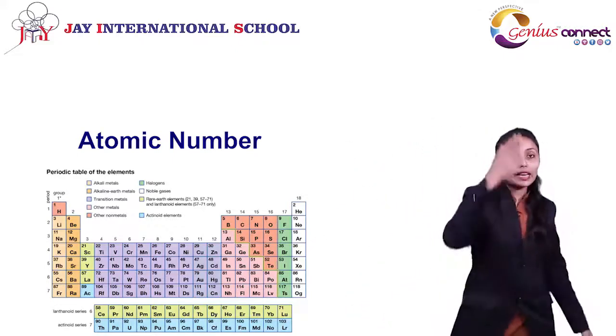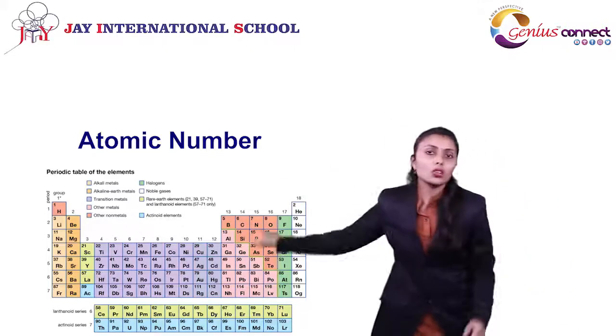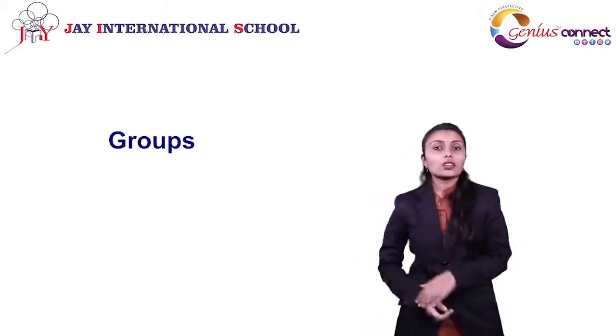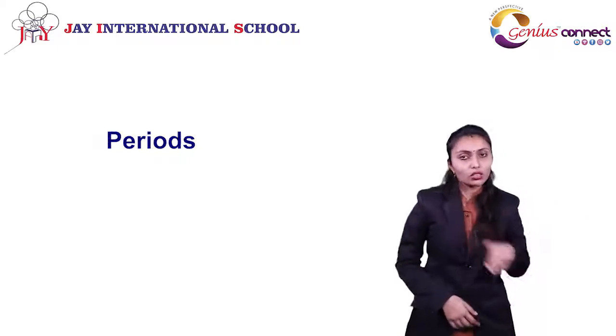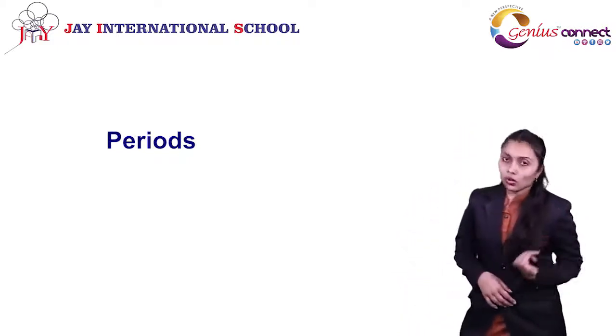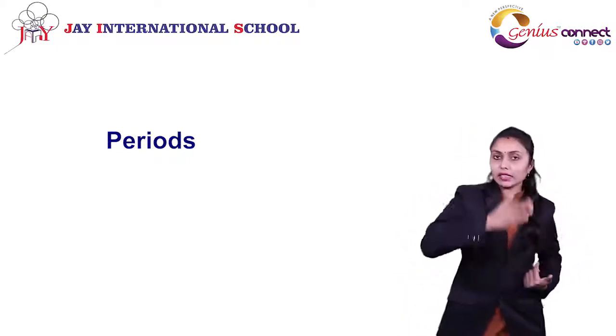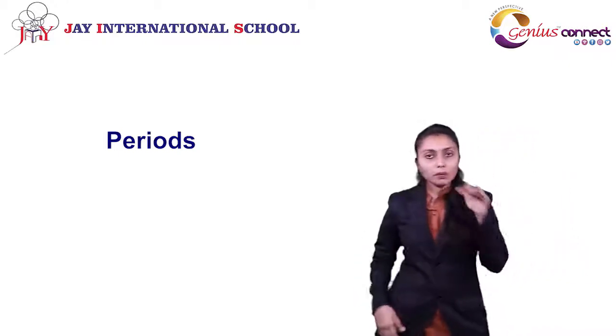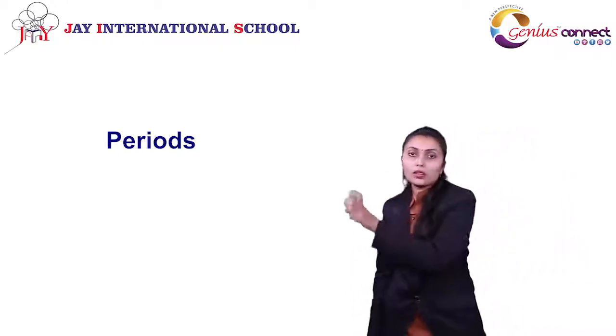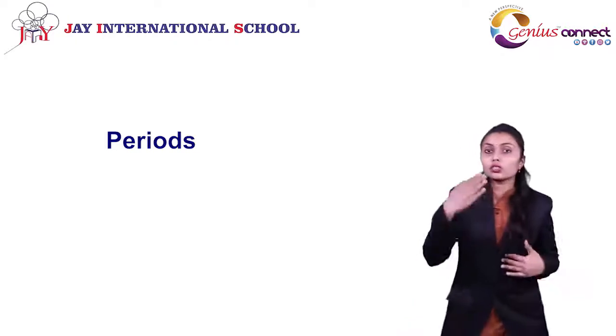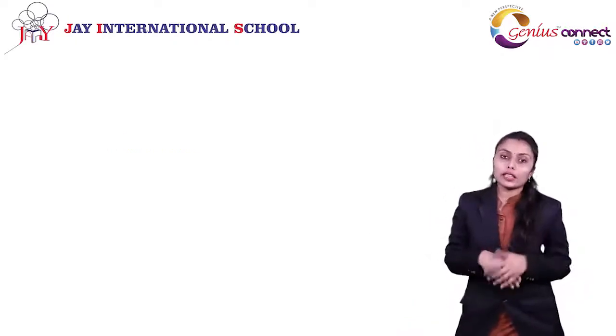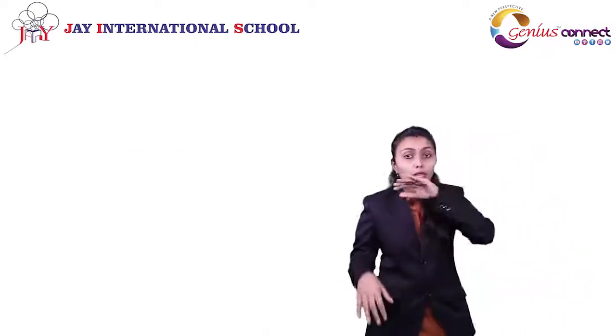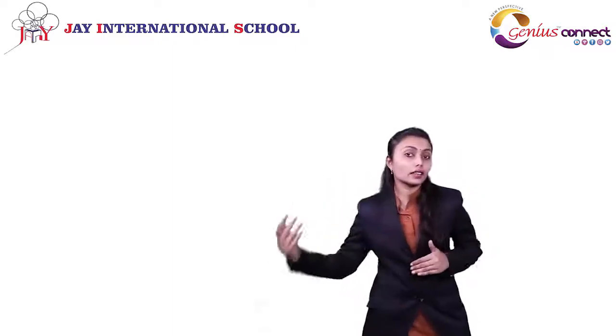There are total 18 vertical columns called groups in a periodic table, and there are total 7 horizontal rows called periods. 18 groups and 7 periods consist of a periodic table. Each group has its own characteristics. Each period has its own characteristics.